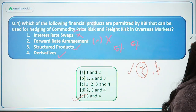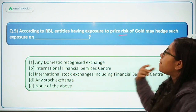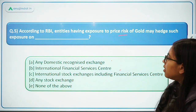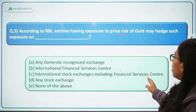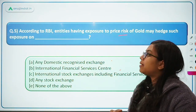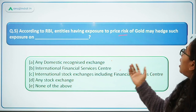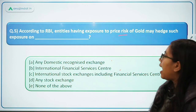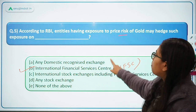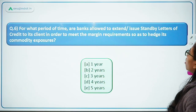Question 5: According to RBI, entities having exposure to the price risk of gold may hedge such exposure on which of the following? Options are domestic recognized exchange, international financial services center, international stock exchanges including the financial services center, any stock exchange, or none of the above. Entities are allowed to hedge gold price risk specifically at the IFSC — International Financial Services Center, such as GIFT City — not on domestic exchanges or general international stock exchanges. Option B is the correct answer.